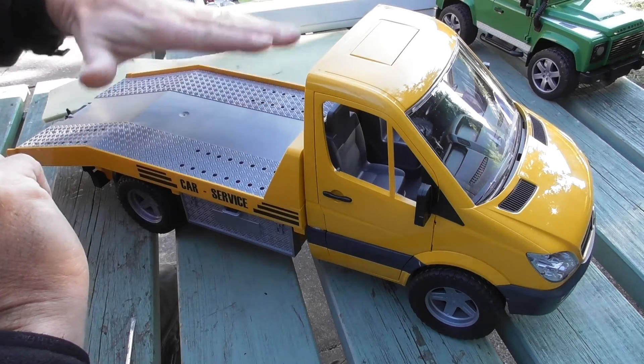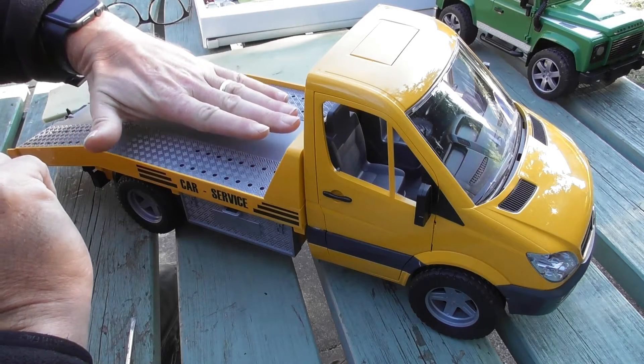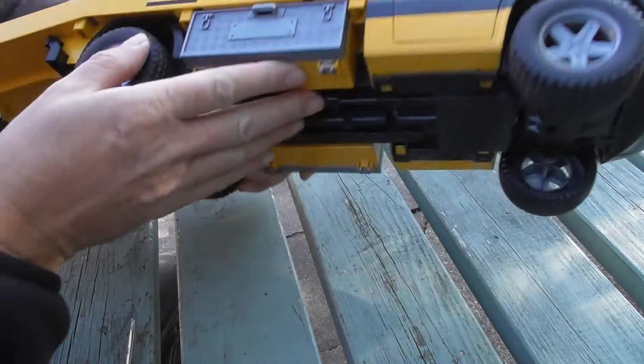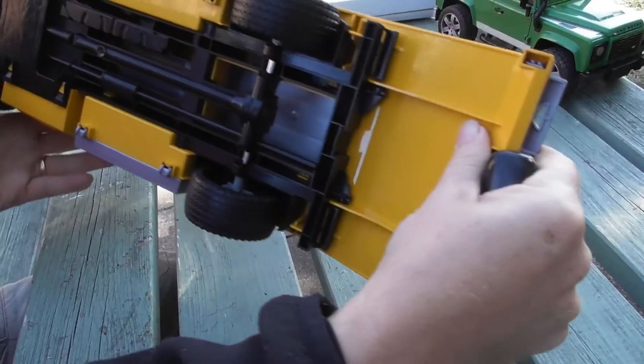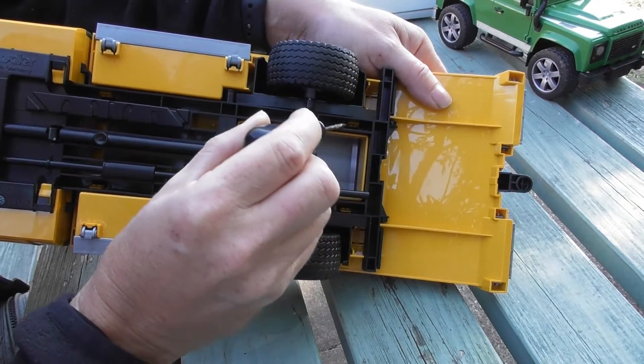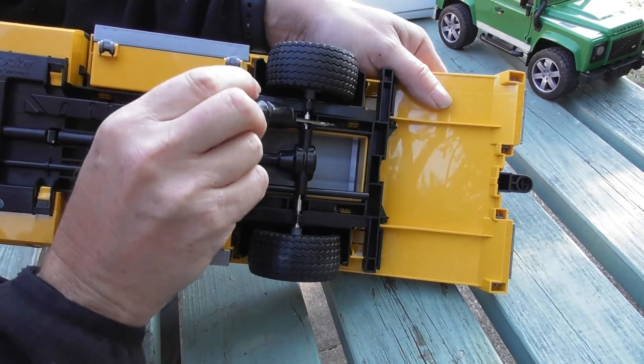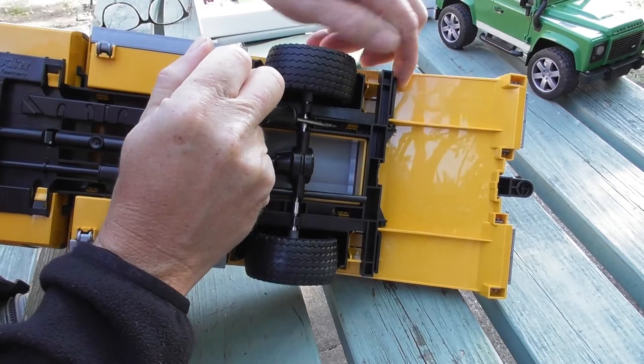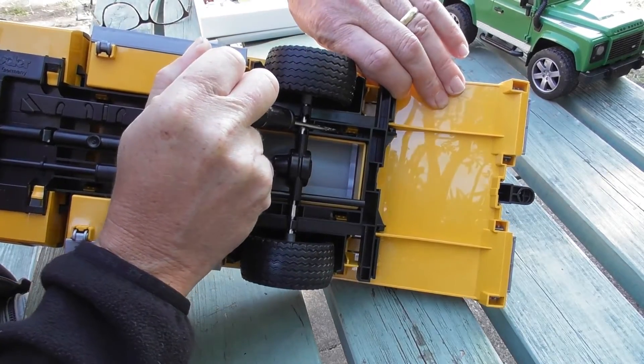The first thing we need to do is take the back off, and I'll show you how that comes off, which is pretty simple. To get this off, there are little black tabs on the black part, the chassis, which you need to move slightly out with a screwdriver and then release each part.